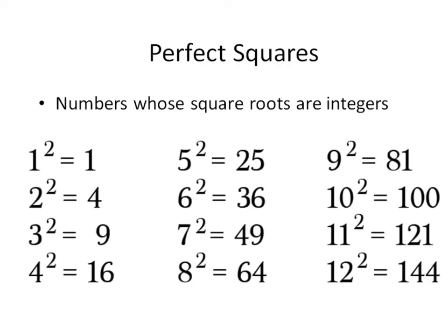First, let's review some of the terminology associated with radicals. Perfect squares are numbers whose square roots are integers. The examples are given below: 1, 4, 9, 16, 25, 36, 49, 64, 81, 100, 121, and 144.